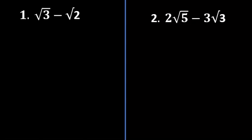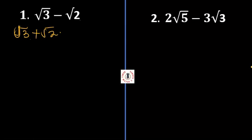For this first example, we will look at √3 minus √2. The conjugate of this surd will be √3 plus √2. Why would this be √3 plus √2? Because when I multiply (√3 + √2) by (√3 - √2), I will get a rational number.